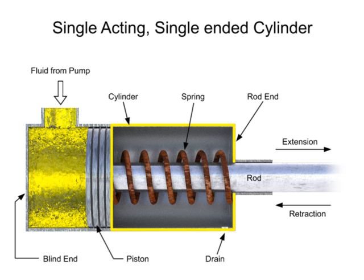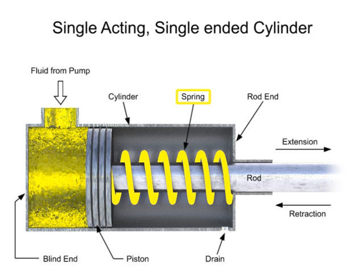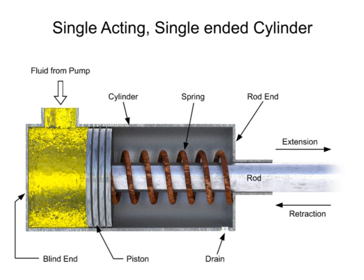This particular cylinder utilizes a spring on the non-fluid side. A single-acting cylinder produces linear motion in one direction. When a control valve directs fluid through the inlet port into the blind end, pressure builds up and generates a force on the piston.